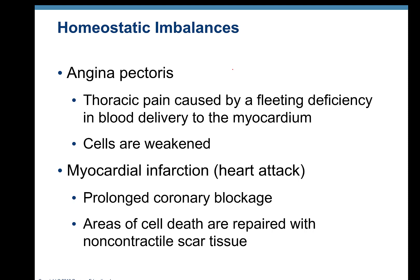Now that we know a little bit about the anatomy of the heart, let's look at some common homeostatic imbalances, and probably the most common one is a heart attack. Often a heart attack starts with angina pectoris. Pectoris relates to the pectoralis muscles at the top of the chest, so angina pectoris means pain in the thoracic area. It's usually short in duration and caused by a fleeting deficiency of blood supply to the myocardium — a short-term lack that weakens cardiac muscle cells but doesn't kill them.